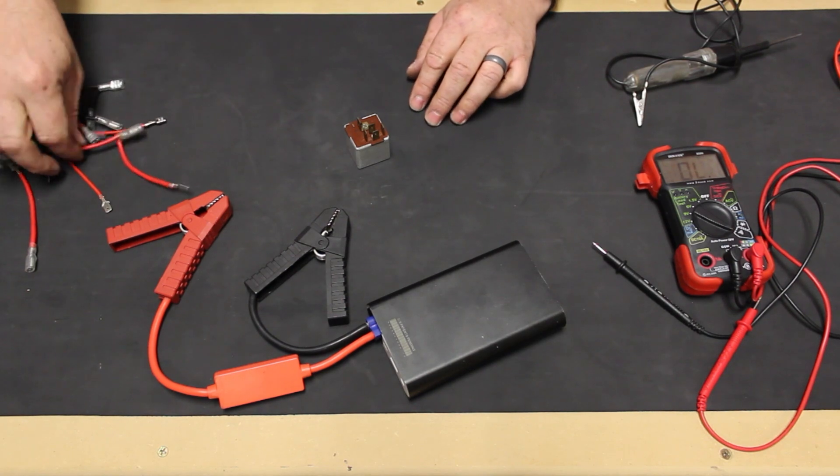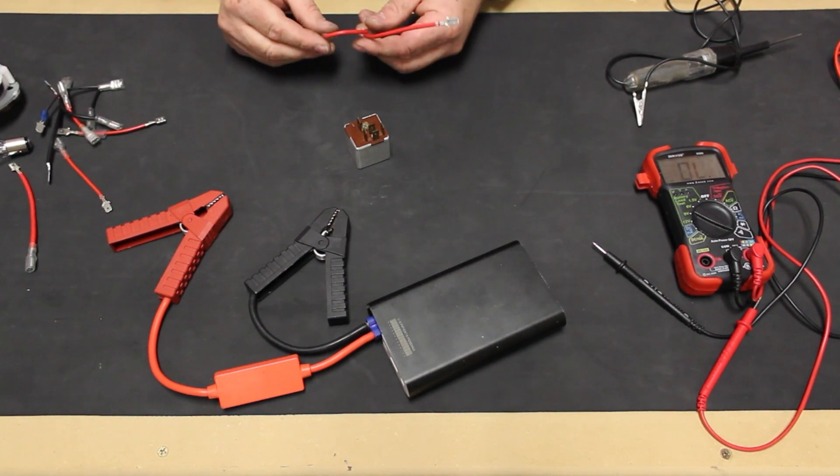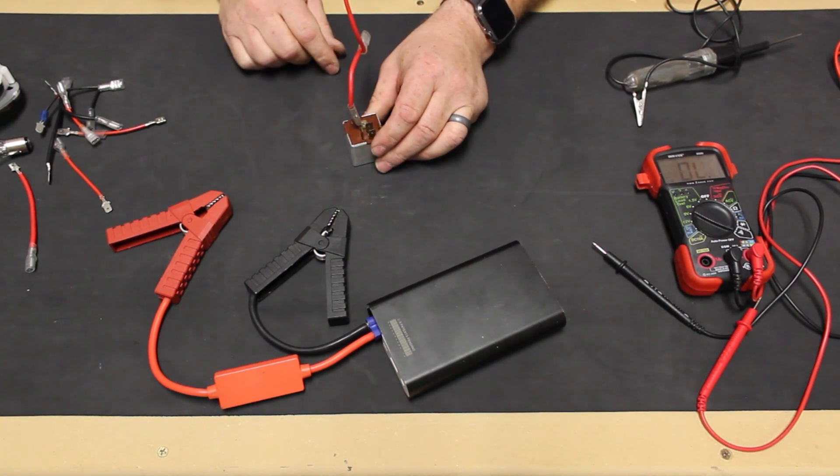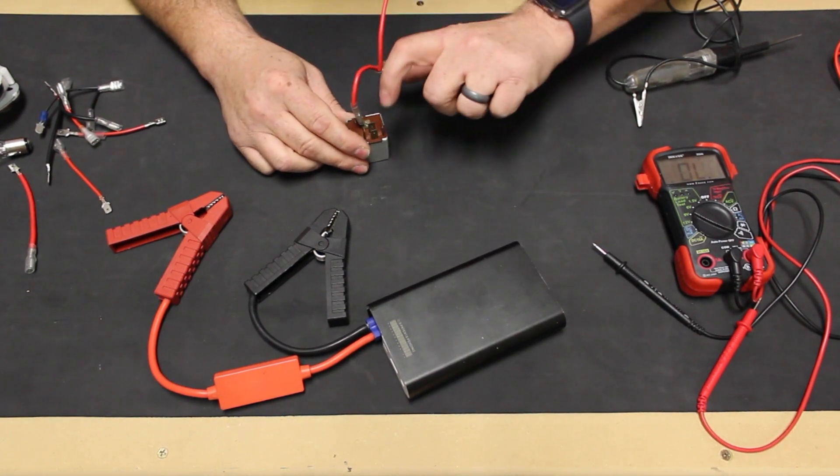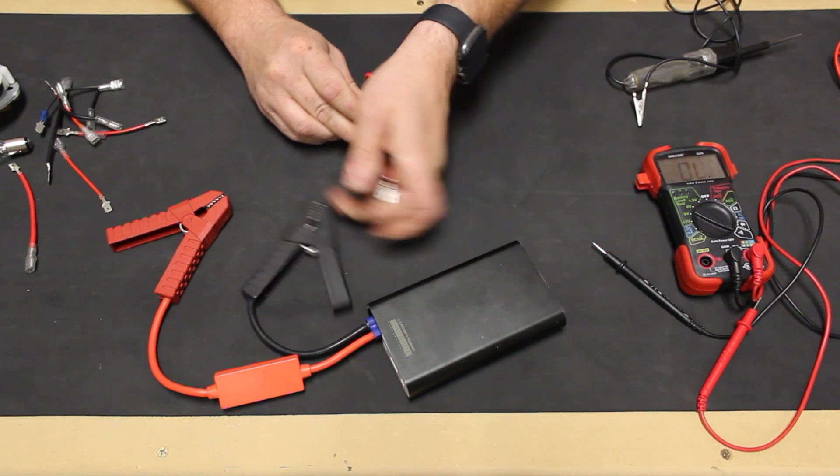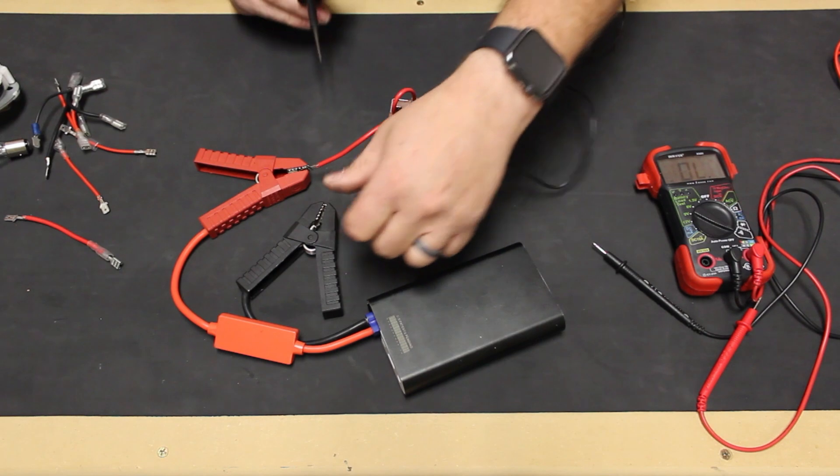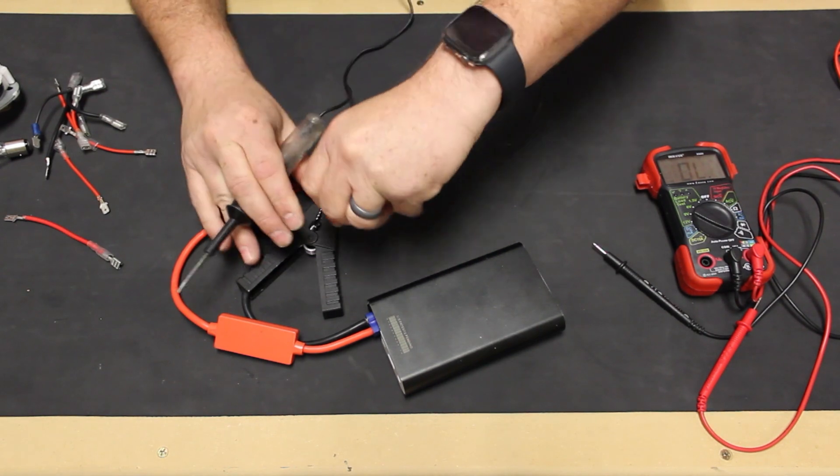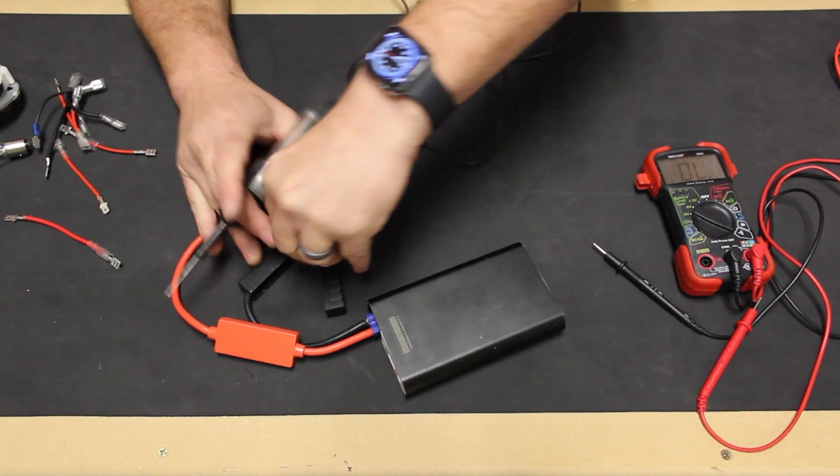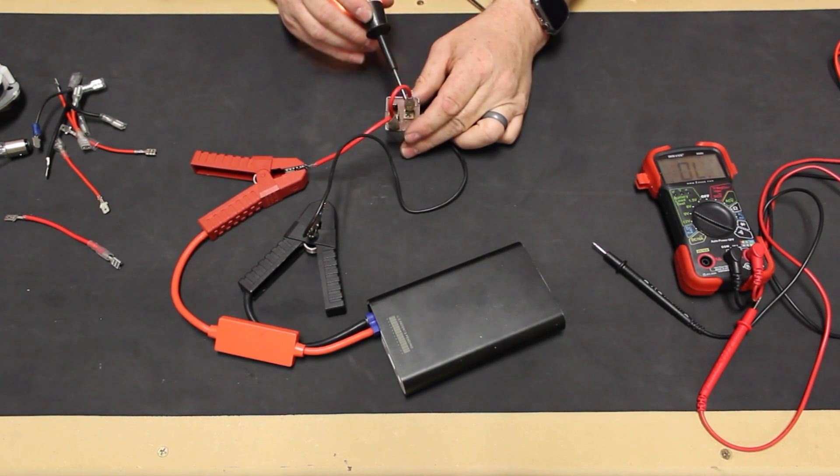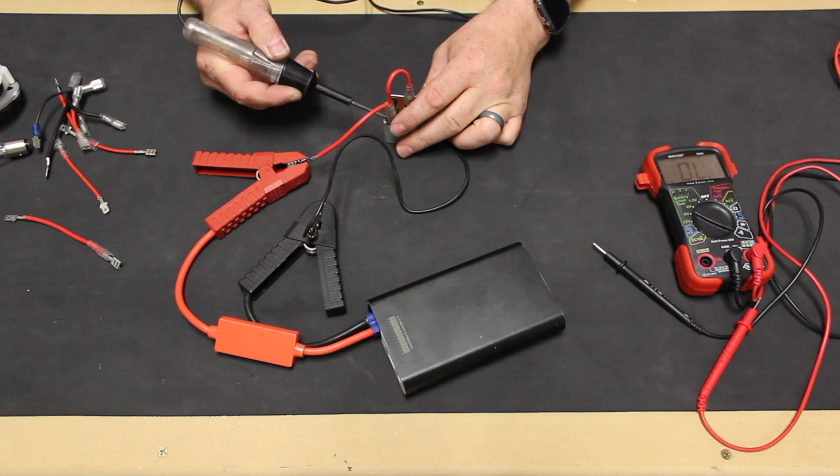To test the relay, we'll hook a small jumper wire to the 30 terminal, so that the relay has power. Then, we'll connect it to the 56 terminal to mock up getting power from the headlight switch, which we'll provide with a 12 volt jumper box. We hook up a test light to the ground of our jumper box, test that our light works by touching the jumper box lead. Then, we check our 30 and 56 terminals to make sure they have power.